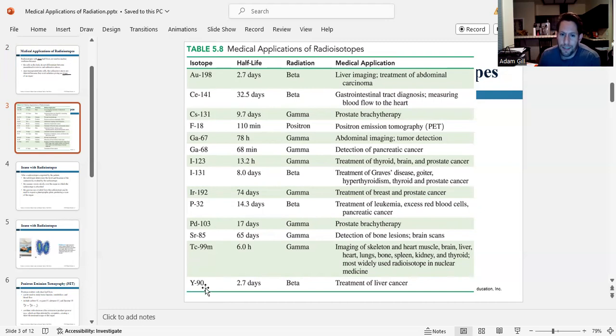And Yttrium-90 has a half-life of 2.7 days. It's a beta emitter, and we use it to treat liver cancer. So you don't need to know any of this. Don't memorize any of these. This was just for fun and to show you some of the different isotopes we use and what they're used for and the type of emission they give. And one thing you should notice is all of these, once again, have a very short half-life, which means they're giving off radiation very quickly, which is why they're useful for medicine.